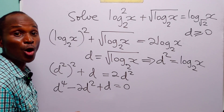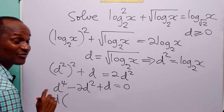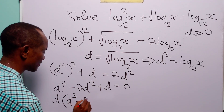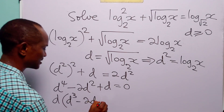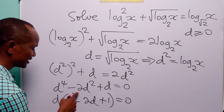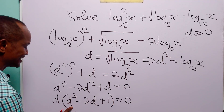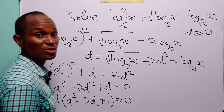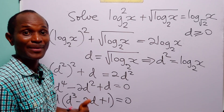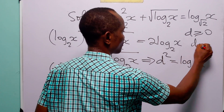Notice that these three terms have a common factor of d, so we can factorize. We have d times (d cubed minus 2d plus 1) equals 0. This means either d equals 0 or d cubed minus 2d plus 1 equals 0, since when a product of two terms equals 0, at least one of them must be 0. So we already have one value: d equals 0.